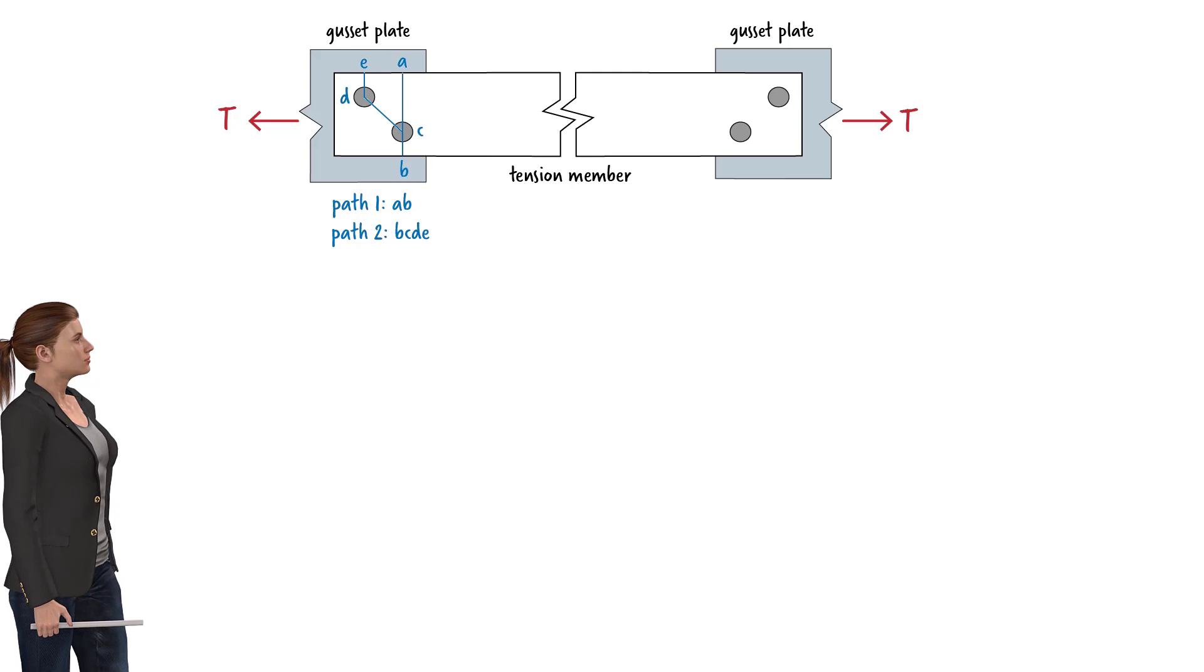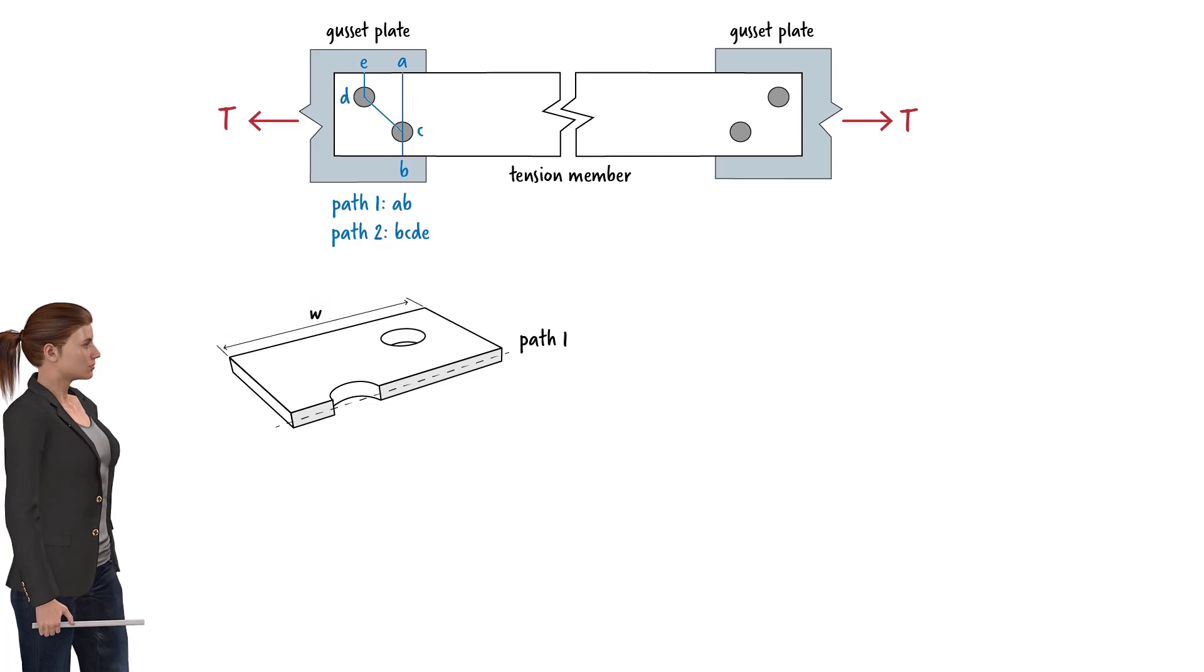We know how to determine the net area along path 1. Here is a three-dimensional view of the cut plate along path 1. If we refer to the width of the plate as w, the thickness of the plate as t, and the effective diameter of the hole as d...